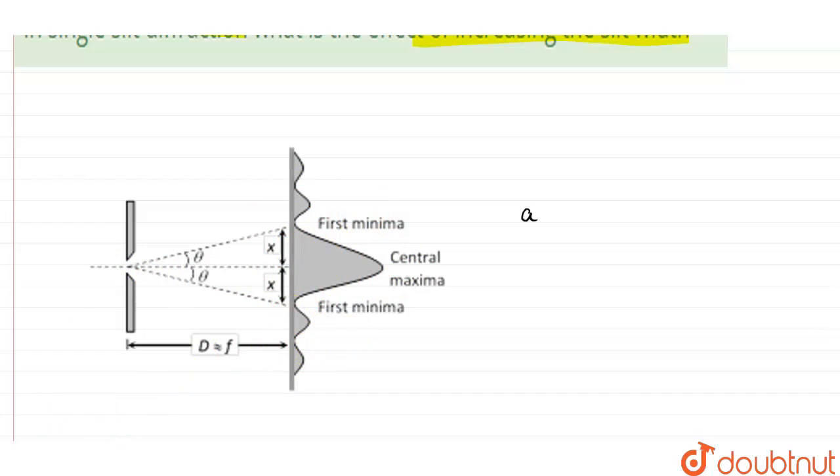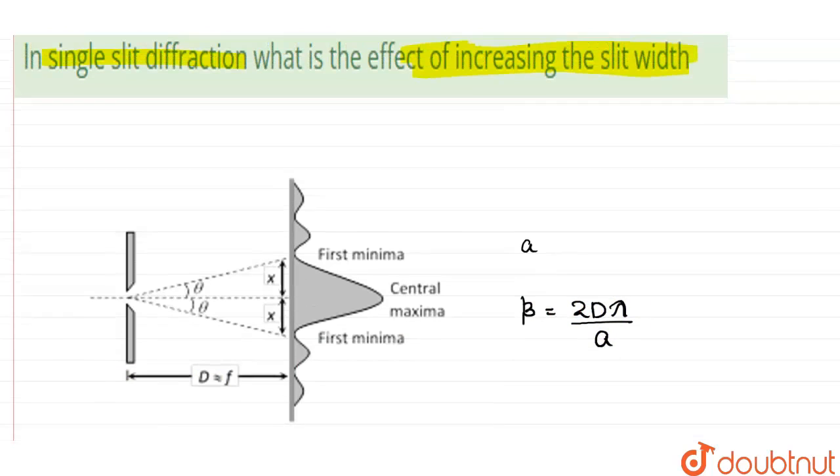Now, if we want to find the width of the central maxima, the equation is beta equals 2 times D lambda divided by A. This is the equation, where D is the distance of the screen from the slit, lambda is the wavelength of the light used, and A is the width of the slit.